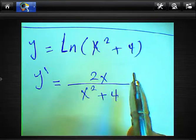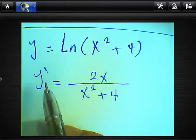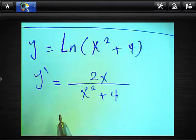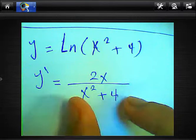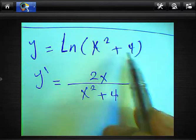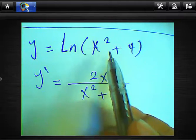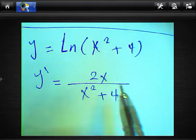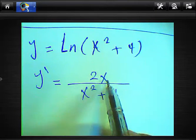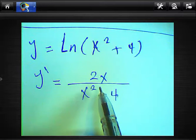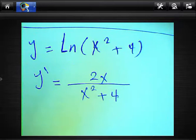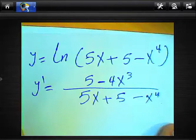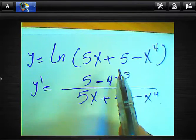Another example: y equals ln(x² + 4). We want to find the derivative of this logarithmic function. We write the expression x² + 4 in the numerator, and find the derivative of x², which is 2x — we drop the power and subtract 1. So the result will be 2x over (x² + 4).